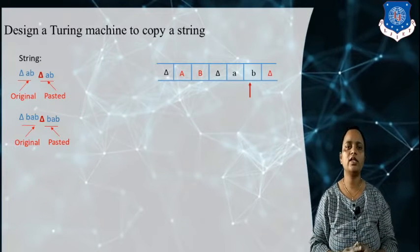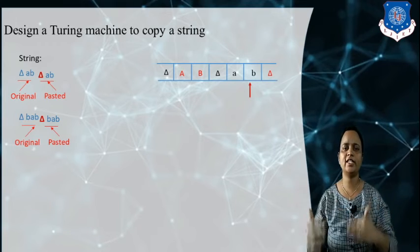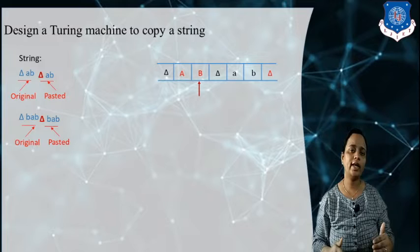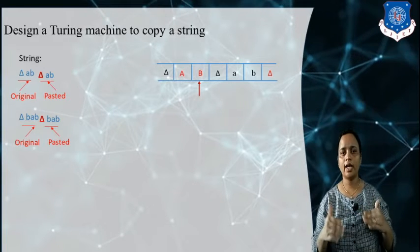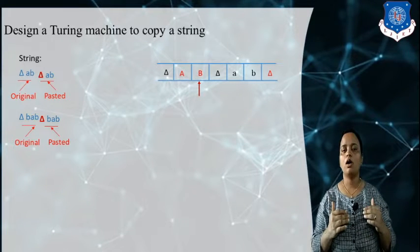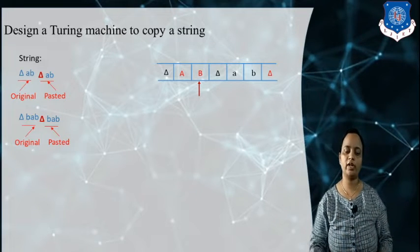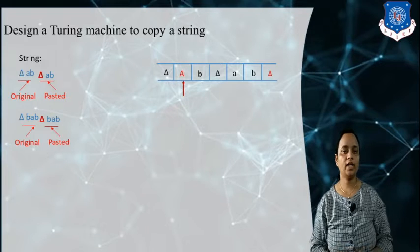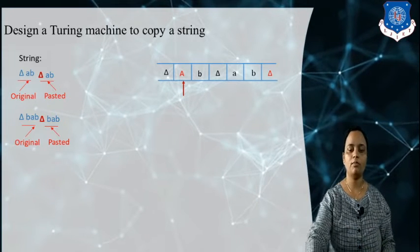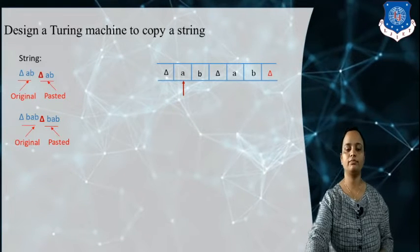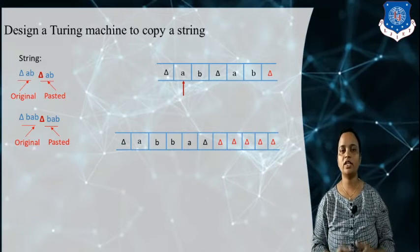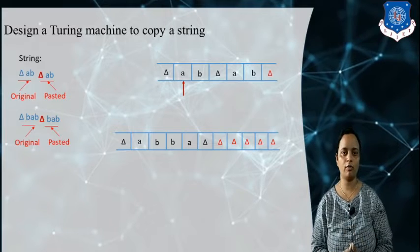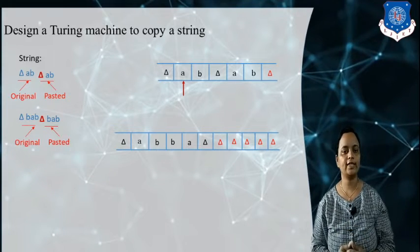When all characters are pasted, my tape head moves to the left side. We then need to replace all capital letters back to their original lowercase form. Capital B is replaced by small b, then move left. Capital A is replaced by small a, then move left. If you reach a delta on the left, it means you have reached the left end of the string — stop and move to the accepting state.